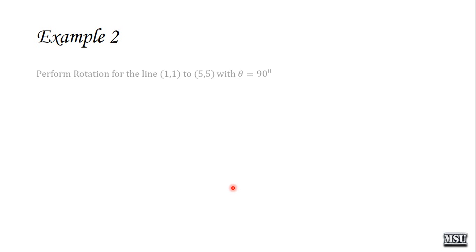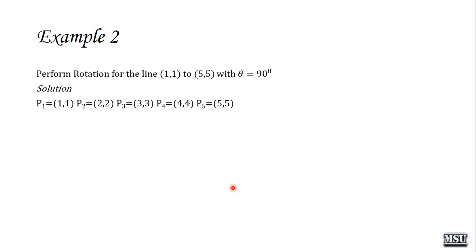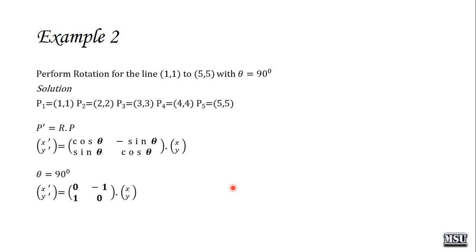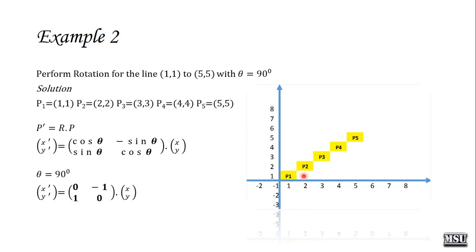Let's discuss another example. Perform rotation for the line from (1,1) to (5,5) with theta = 90 degrees. We consider an interval of 1, so: p1 = (1,1), p2 = (2,2), p3 = (3,3), p4 = (4,4), p5 = (5,5). We apply the rotation formula directly to each point.